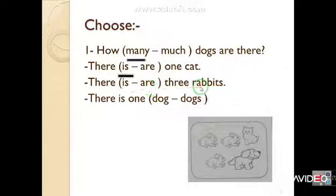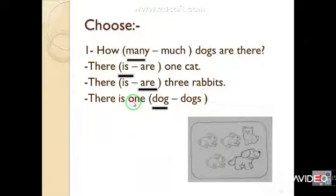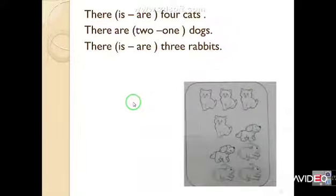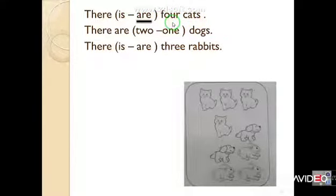Three rabbits — three, so: 'There are three rabbits.' One dog — just one dog. Excellent! Okay, there is or there are — four cats? Four! So: 'There are four cats.'